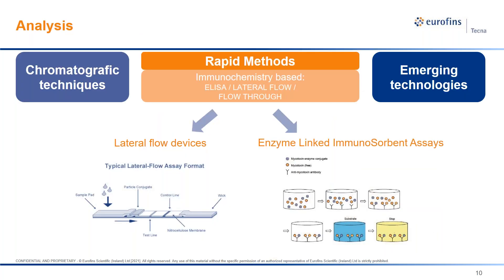For mycotoxins analysis there are many techniques and methods ranging from chromatographic approaches to new technologies for on-site testing. For industries needing easy, rapid, simple and sometimes high-volume analysis, immune-based assays are the technologies of choice. Rapid methods based on immunochemical techniques often have the advantage of not requiring any cleanup or analyte enrichment steps. ELISAs have become routinely used tools for rapid monitoring of most mycotoxins, especially for the screening of raw materials. The advantages of the microtiter plate formats are speed, ease of operation, sensitivity and high sample throughput, making ELISA tests commercially available for most of the major mycotoxins.